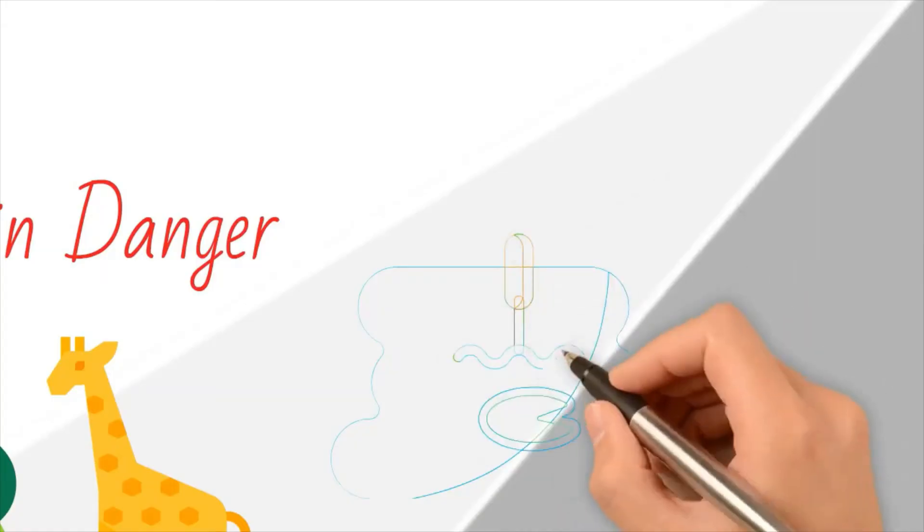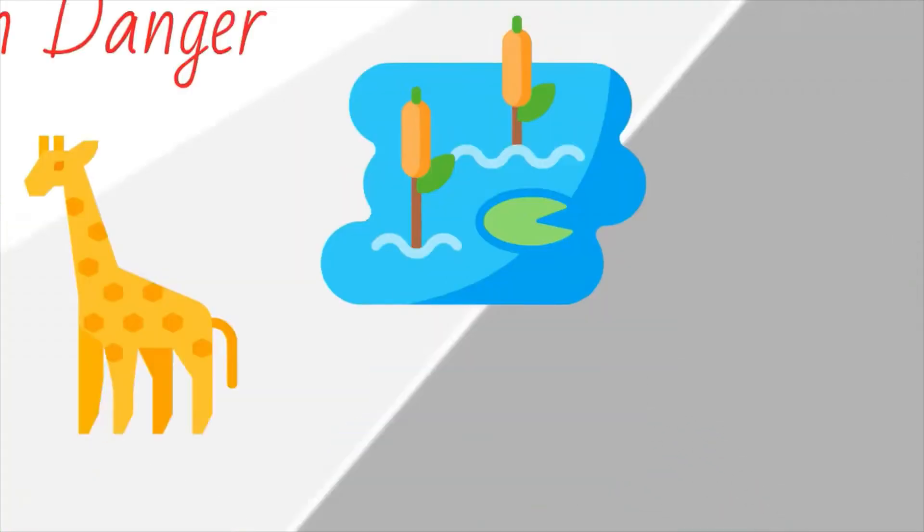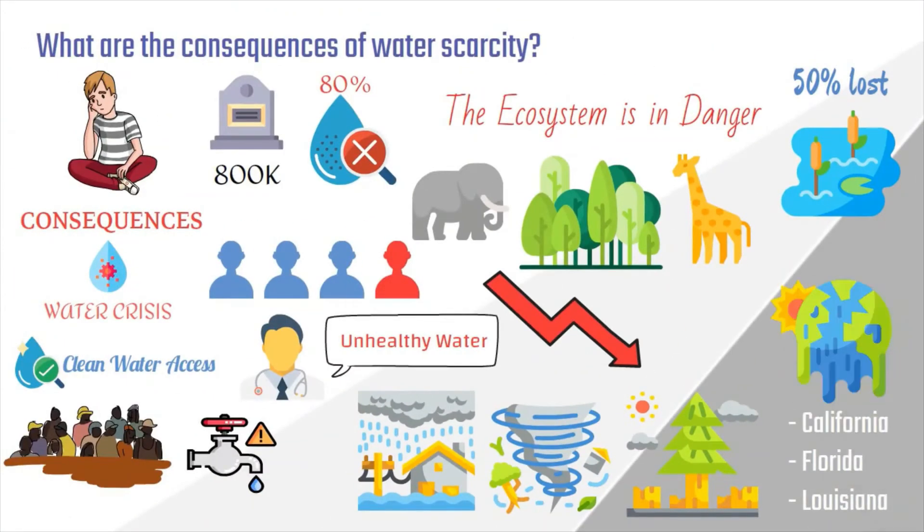Collectively, the world has lost 50% of all its wetlands since 1900. And nowhere is immune. Even places like California, Florida, and Louisiana have witnessed high rates of wetlands disappearance.